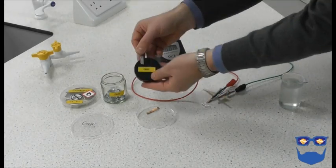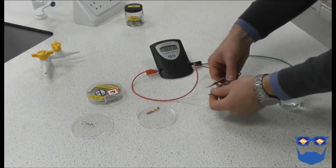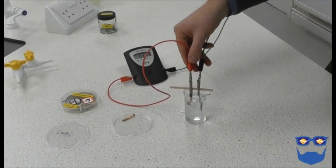Return the copper electrode to the positive lead. Return your zinc strip to the container and replace it with a magnesium strip. You should observe that the voltage is higher.